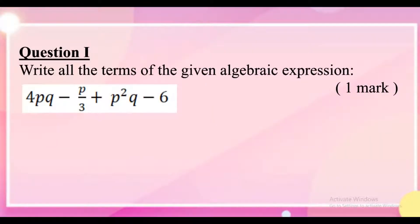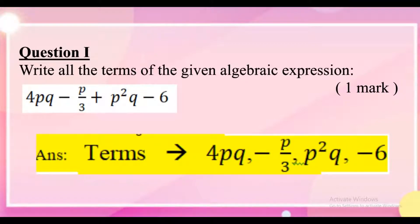The first question is: write all the terms of the given algebraic expression — 4pq minus p by 3 plus p square q minus 6. A term of an algebraic expression refers to the various parts separated by addition or subtraction signs. There are four terms: 4pq, minus p by 3, p square q, and minus 6. This question carries one mark, with each term carrying one-fourth mark.